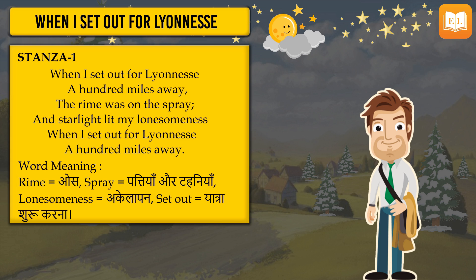Aap samajh hi sakte hain ki kitna beautiful environment hoga — halki-halki ठंड aur fresh air. So in total, it was a beautiful day for him. Ab raat ho jaati hai, and he continues describing the beautiful experience and says, even the starlight lit my lonesomeness — ki woh raat bhi itni charming aur beautiful thi ki un sitaron ki roshni aur unki beauty ne unhe kabhi lonely feel nahi hone diya. Woh ek bahut hi sundar journey thi. And with that, first stanza ends: 'When I set out for Lyonnesse, a hundred miles away.'